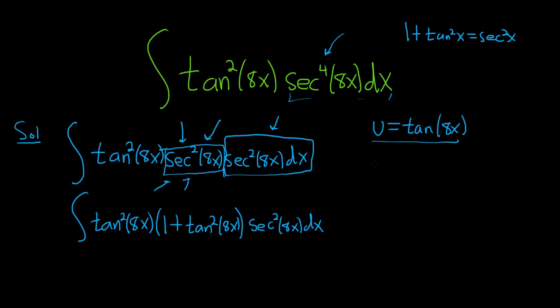Let's go ahead and find our du. The derivative of u is secant squared. So here it's secant squared of 8x times the derivative of the inside. The derivative of 8x is 8, and then we have our dx. We have to make this match our integral, so we'll divide both sides by 8. This ends up being 1/8 du equals secant squared of 8x dx.